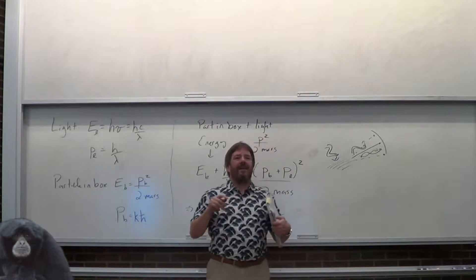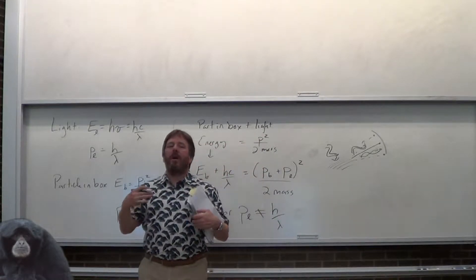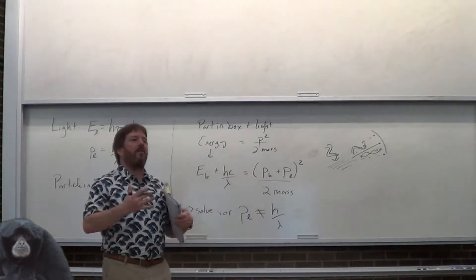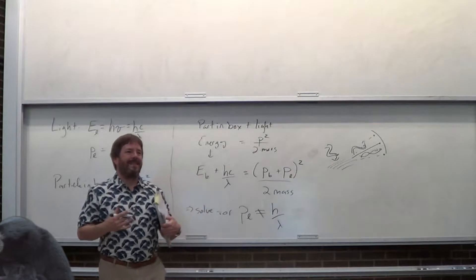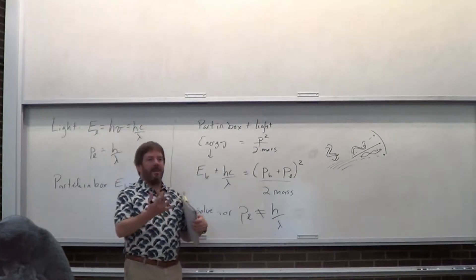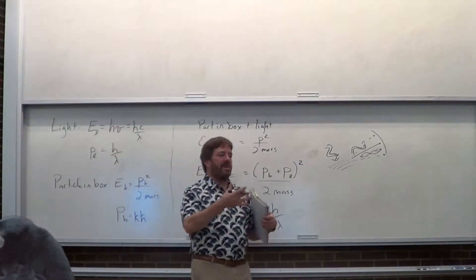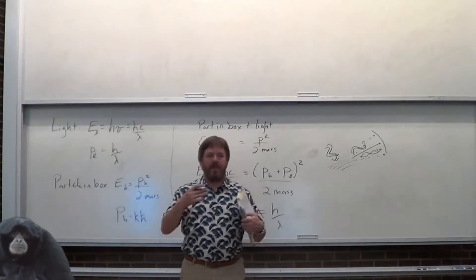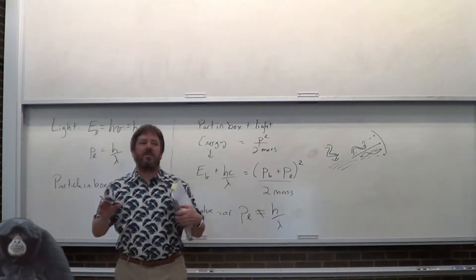Remember I said that the particle on the infinite track never absorbs light because you can't conserve energy and momentum at the same time — you're violating one of the conservation laws. So what would a photon never do if it violates conservation of energy?